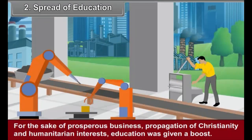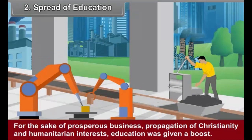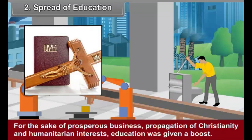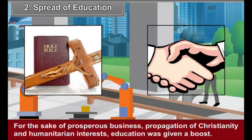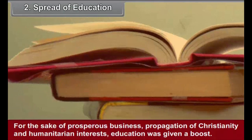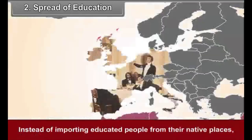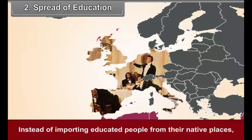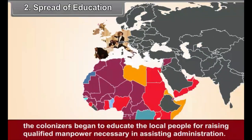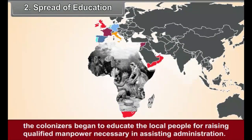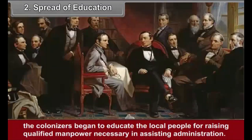The second constructive effect was the spread of education. For the sake of prosperous business, propagation of Christianity and humanitarian interests, education was given a boost. Consequently, the colonies came under the impact of Western education. Instead of importing educated people from the native places, the colonizers began to educate the local people for raising qualified manpower necessary in assisting administration.